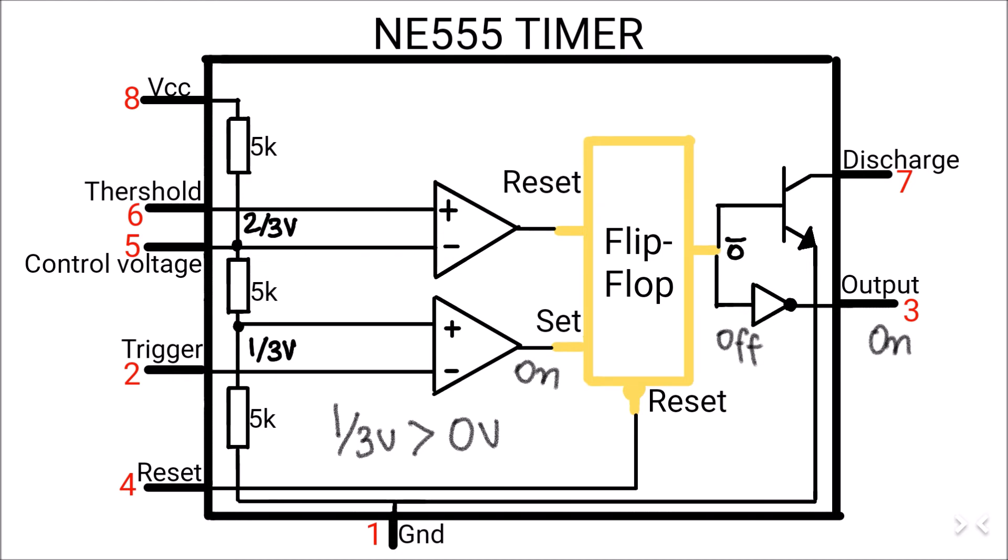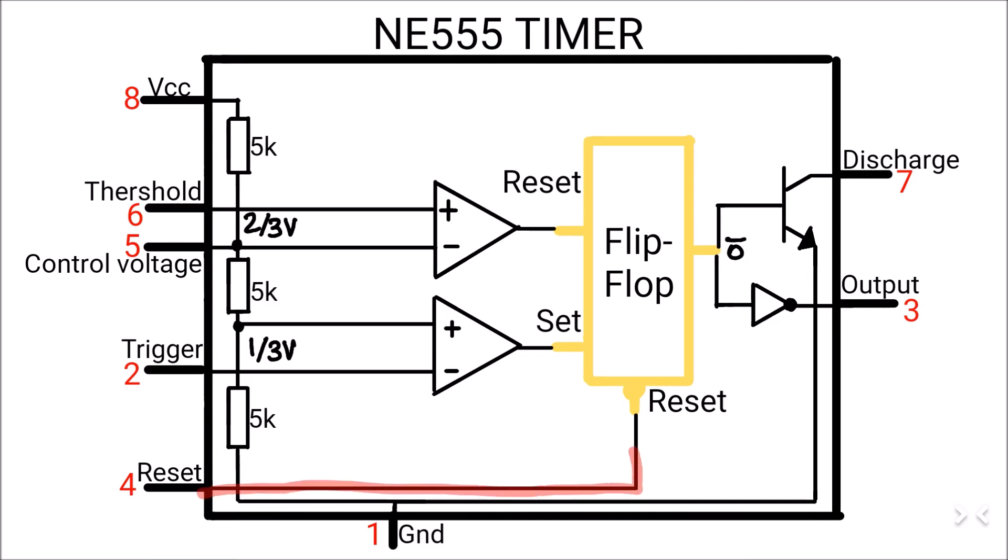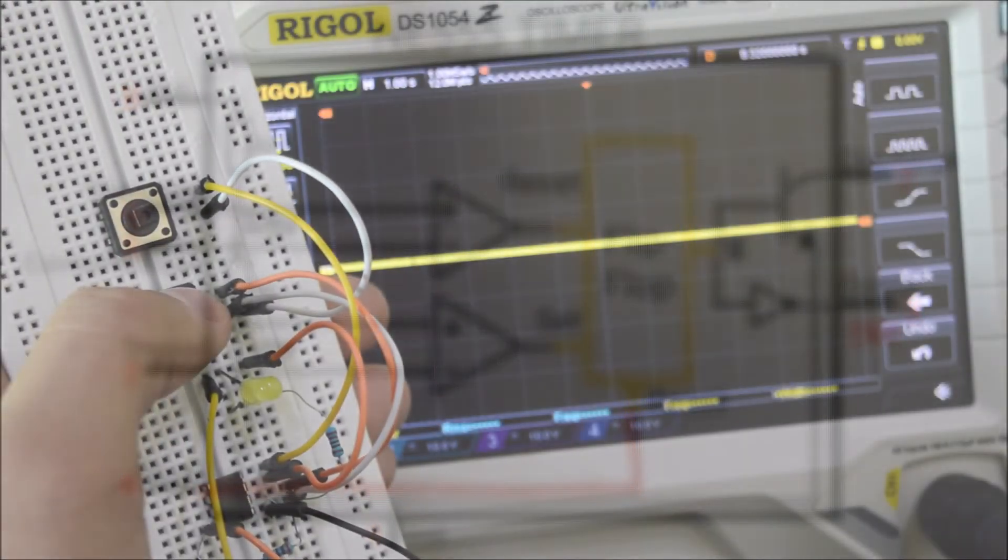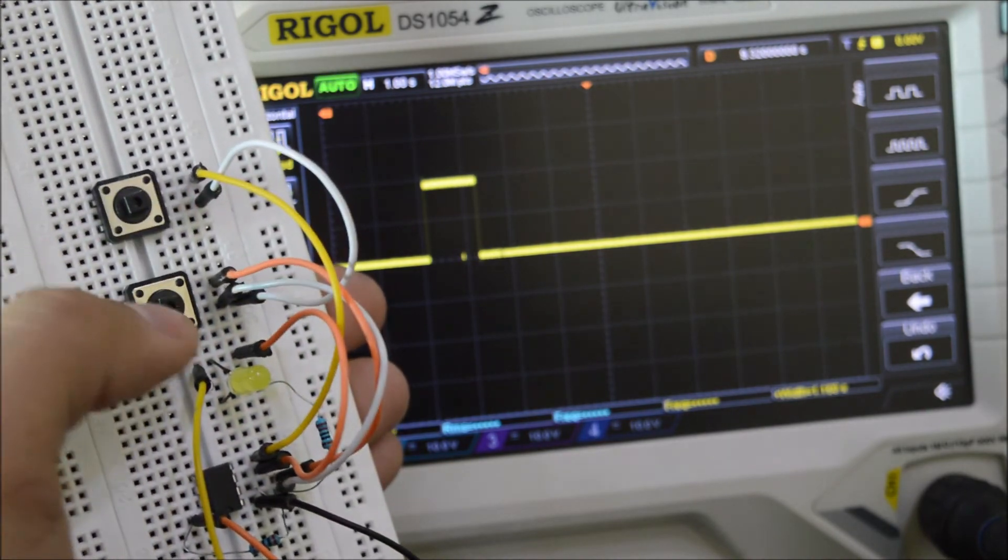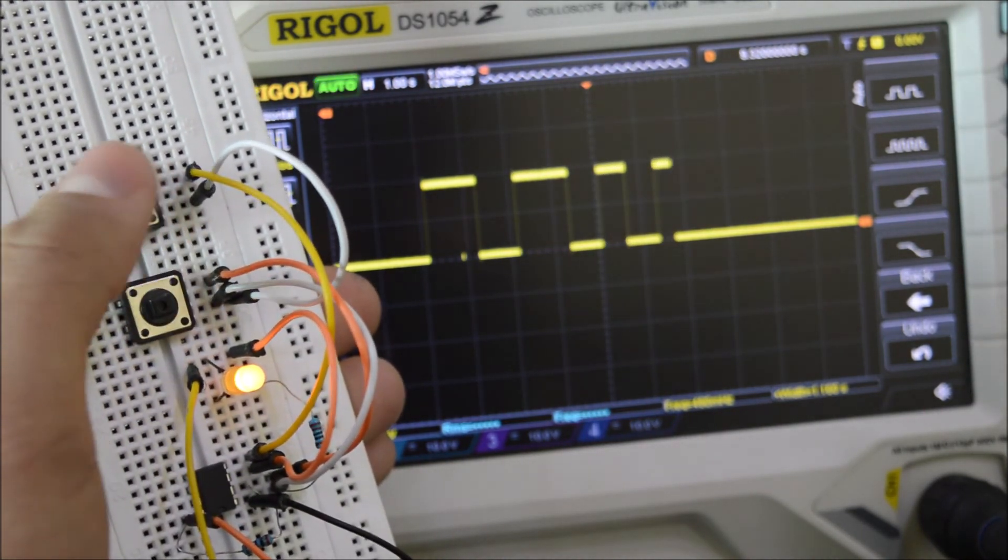Now, to turn off the output, we have to connect the reset pin to the ground, which will turn off the flip-flop thus the output immediately. This kind of circuit creates two stable states, high and low, and it is used to turn the output on and off with separate push buttons.